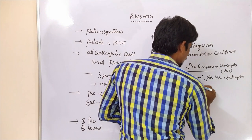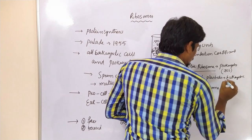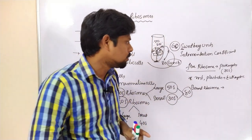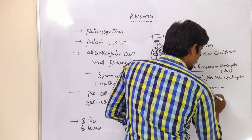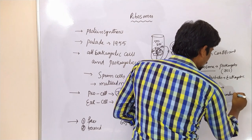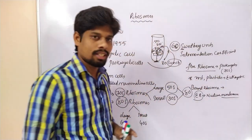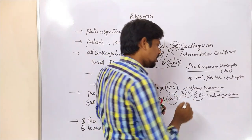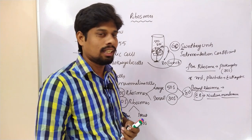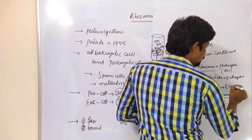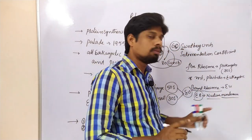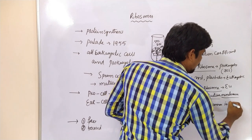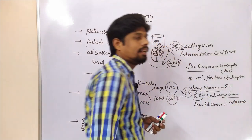Coming to bound ribosomes — these are ribosomes which are attached to membrane structures. Actually, these ribosomes are bound to the endoplasmic reticulum and nuclear membrane. The eukaryotic cells contain bound ribosomes, and along with bound ribosomes, eukaryotic cells also contain free ribosomes in the cytoplasm.